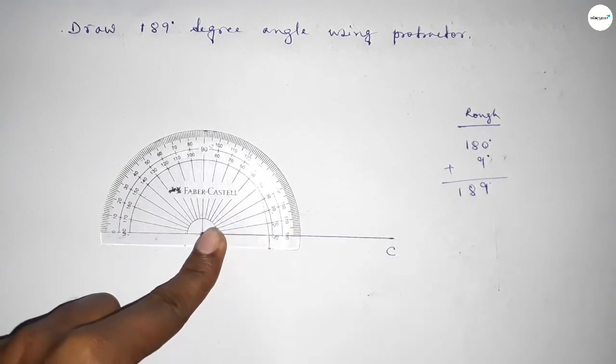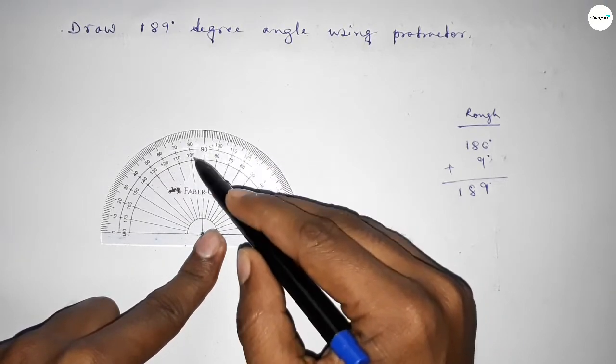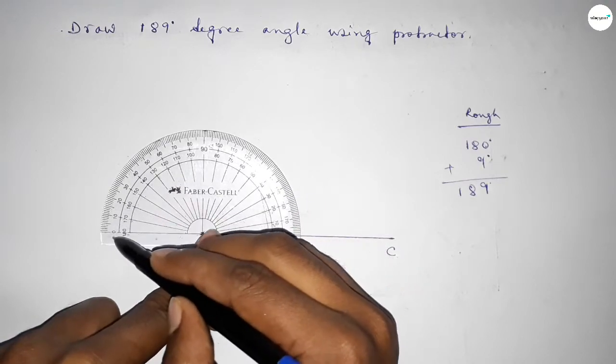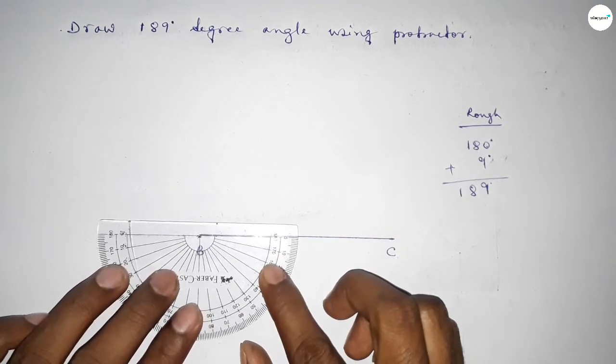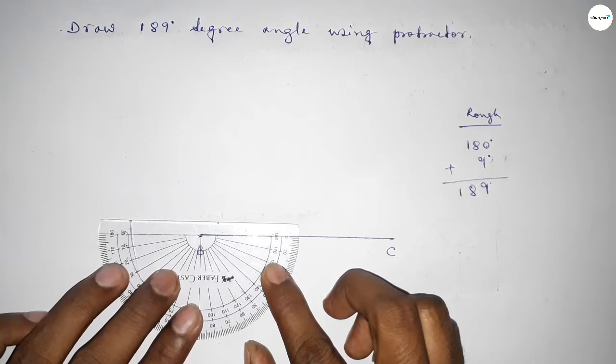So putting the protractor on point B and counting the angle 180 degrees. So this is total 180 degrees. Again, putting the protractor on the point B perfectly, then we have to count 9 degree angle.